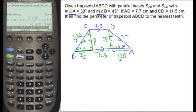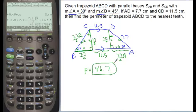When I calculate that all, I get my answer. The perimeter is approximately 46.7, if I round it to the nearest tenth.